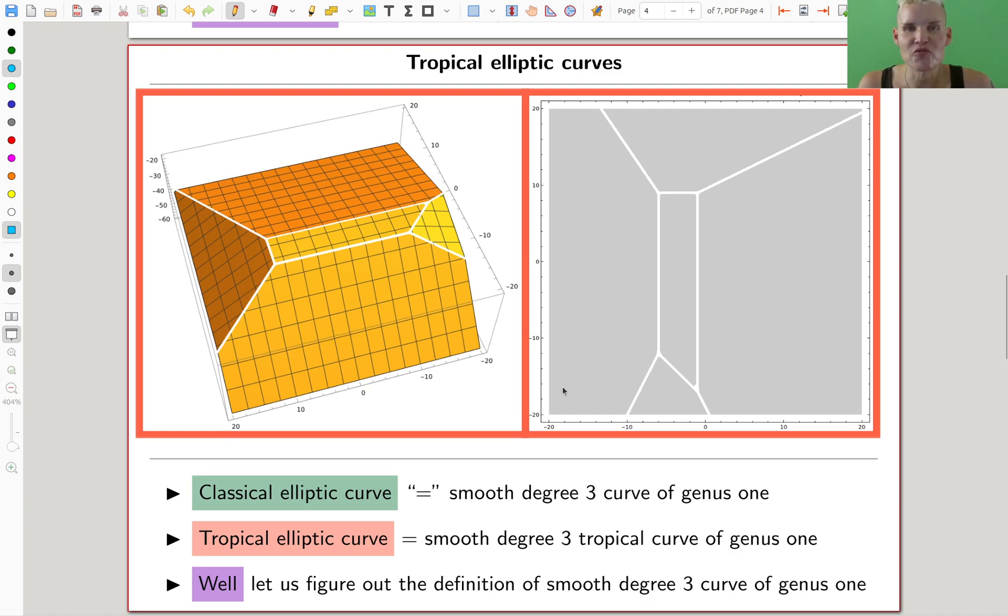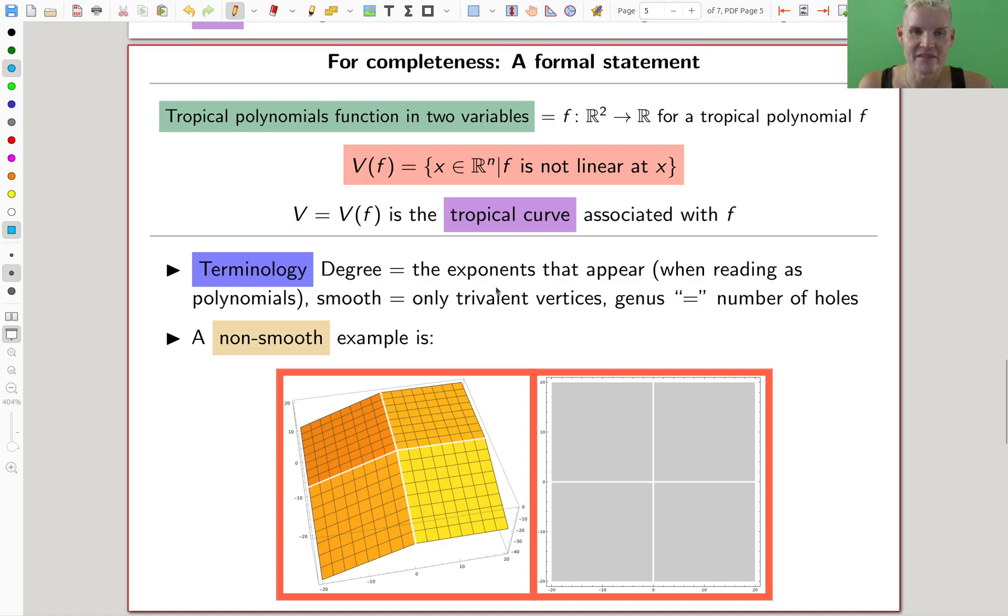Degree 3, that kind of makes sense. You have an x cubed. What is genus 1? What is smooth? Tropical is exactly the same. So what is smooth? What is genus 1? I will explain it in a second. It's really the same definition. So a tropical curve is really just a tropical function in two variables, and the variety is the tropical curve. And the degree is the exponent in the classical polynomial.